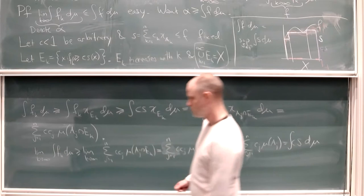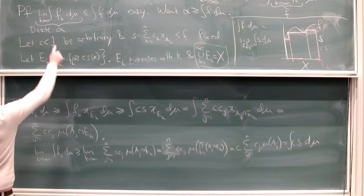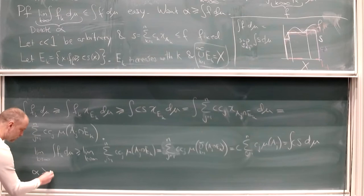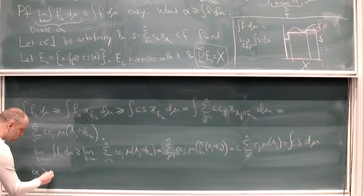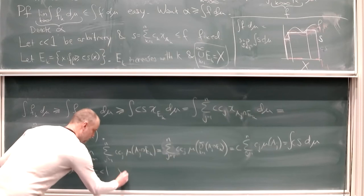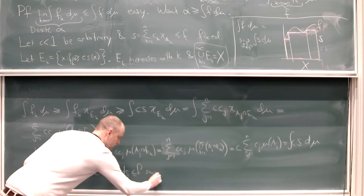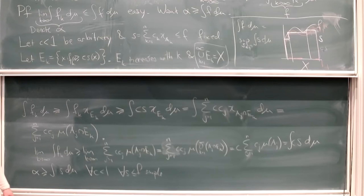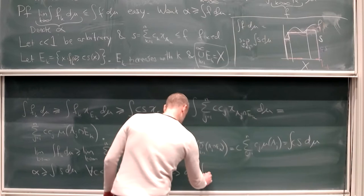So alpha ≥ integral of c·s d mu for all c < 1 and for all simple s ≤ f. Taking the supremum over all c's sends c → 1. Taking the supremum over all simple s's ≤ f, by definition gives integral f. So alpha ≥ integral f, completing the proof of the Monotone Convergence Theorem.